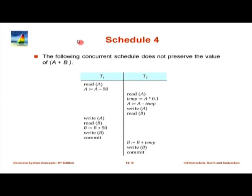Now consider schedule 4, which has a problem. T1 reads A and subtracts 50 but has not yet written A. Meanwhile T2 reads A, computes temp, writes A. Then T1 writes A — but it writes the original A minus 50, clobbering what T2 wrote. T2's update is wiped out. The final value of A is the original minus 50, while both B increments still happen. The net result does not preserve the integrity constraint that A plus B should remain unchanged. This schedule is not equivalent to either serial schedule.